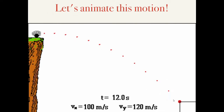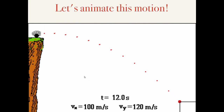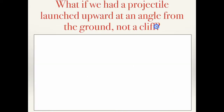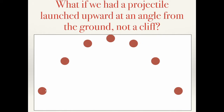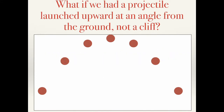Now let's practice a slightly different situation. What if a projectile is launched from the ground — not from the top of a cliff — up at an angle? The ball is launched upward at some angle, turns around, and comes back down to the same vertical position at a different horizontal position. Pause the video now and draw the components of velocity at each snapshot for this situation.